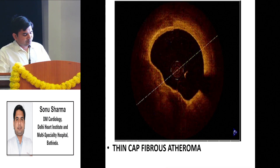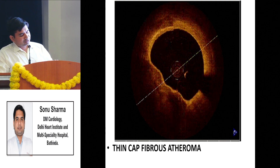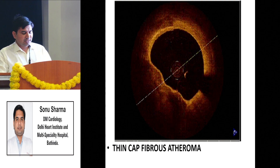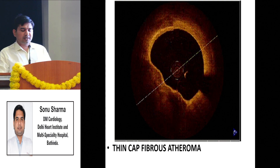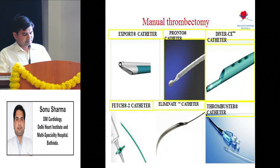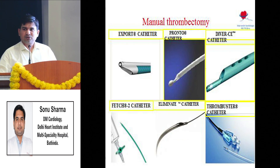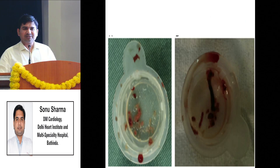This is a classical example of thin-cap fibroatheroma. The yellow part - the upper layer - is quite thin, less than 64 micrometers. The chance of rupture is quite high, and this is a major cause of MI in young patients. If we diagnose a patient at this stage and give statins, we can significantly reduce the risk of MI. These are the various thrombectomy catheters used in the coronary cath lab to aspirate thrombus from the coronary artery.